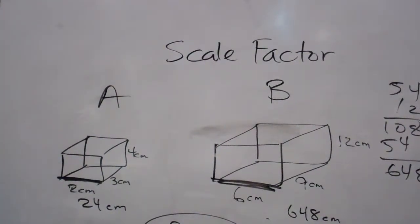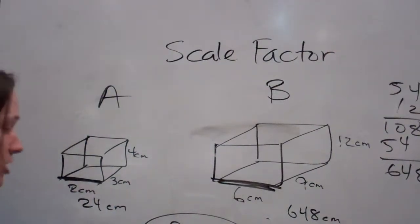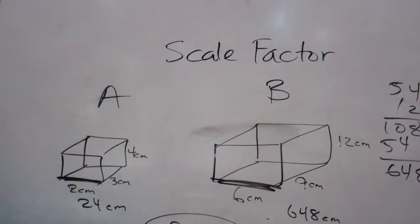My scale factor was what? Three. What do we know about area? What do I always tell you to put? Square. So, guess what? All you have to do is square your scale factor. So, the area, three squared is nine. Everybody get it?